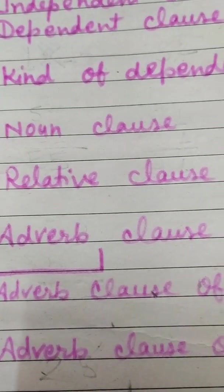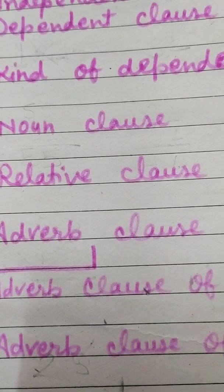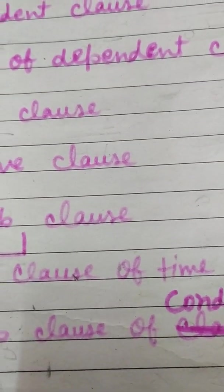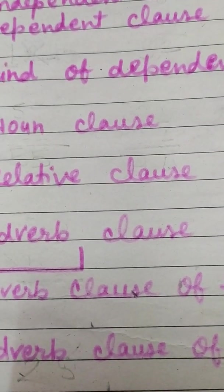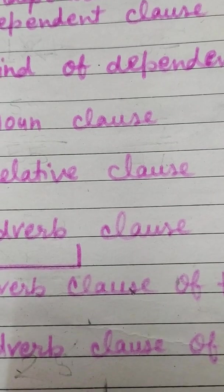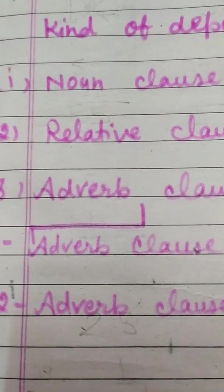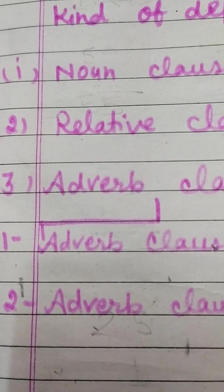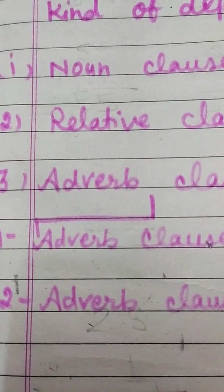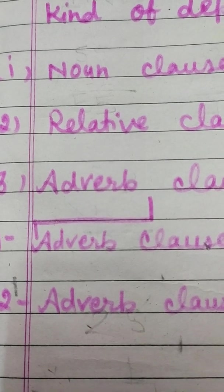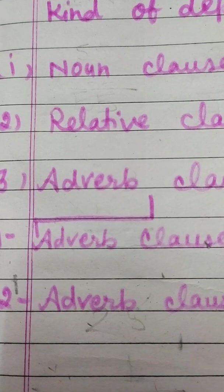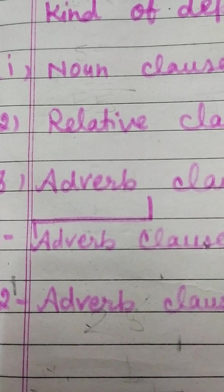The third type is adverb clause. Adverb clause is of two types: adverb clause of time and adverb clause of condition. It functions as an adverb and tells you something about how the action in the verb was done. Adverb clause of time modifies a verb in the main clause to tell the time when the action takes place.